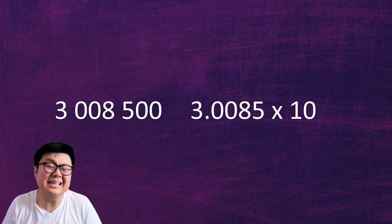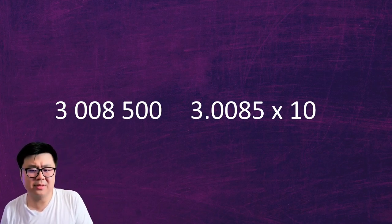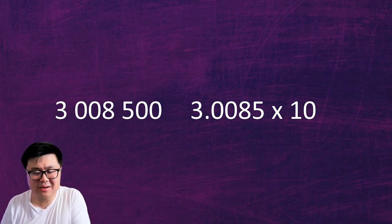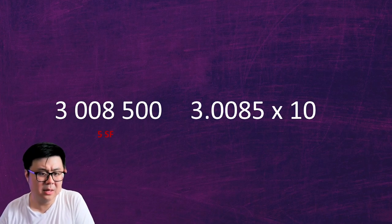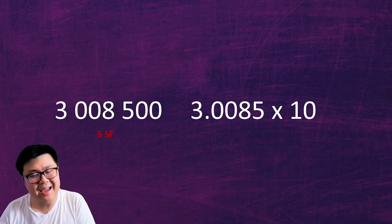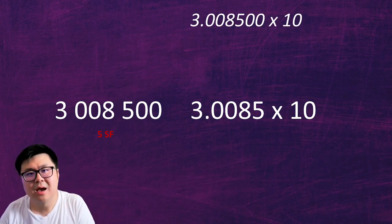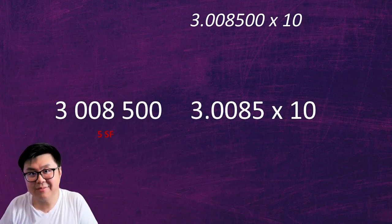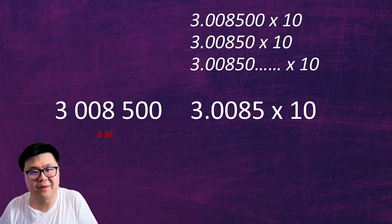Let's take a number and transform it into scientific notation. Our first number can only be a single digit between one to nine. Looking at 3,008,500, we have no choice but to put the decimal right after the three to keep it a three-point-something number. So we have 3.0085 times 10 to the power of something. You might wonder what happened to those two zeros after the five. Well, this number has five sig figs, and my scientific notation kept it as five. Scientific notation is a great way to manipulate the number of sig figs in your final answer to make sure you have the right sig figs.